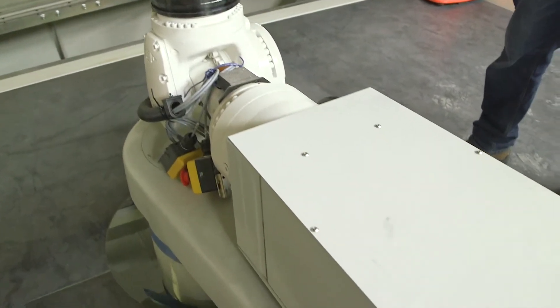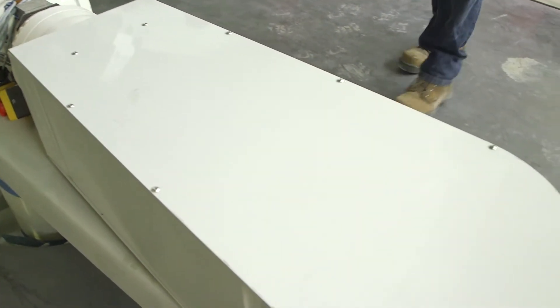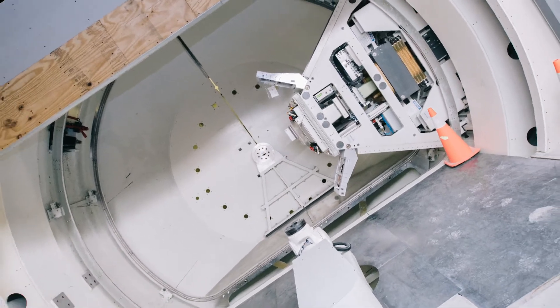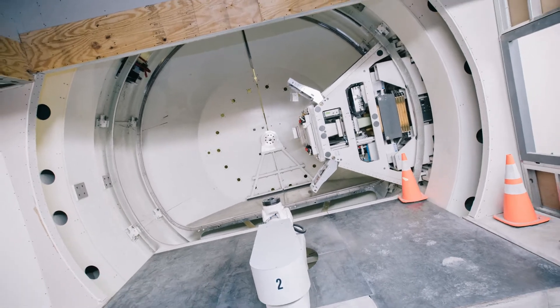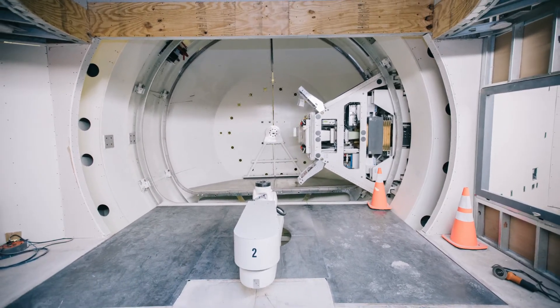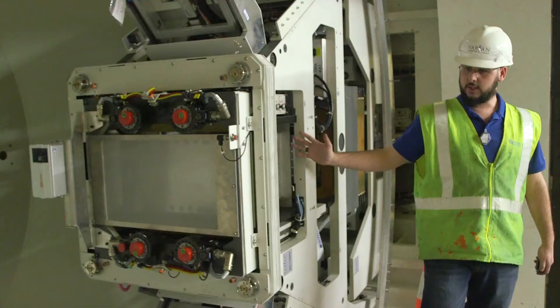A robotic patient positioner system is used to precisely align the patient, while the gantry can rotate 360 degrees around the patient to direct the proton beam from the most appropriate angle towards the tumor.